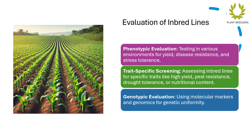Evaluation of inbred lines involves: phenotypic evaluation, testing in various environments for yield, disease resistance, and stress tolerance; trait-specific screening, assessing inbred lines for specific traits like high yield, pest resistance, drought tolerance, or nutritional content; and genotypic evaluation, using molecular markers and genomics for genetic uniformity.